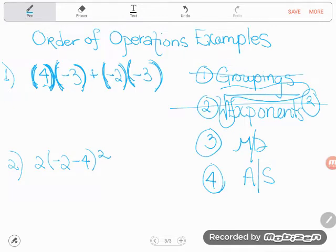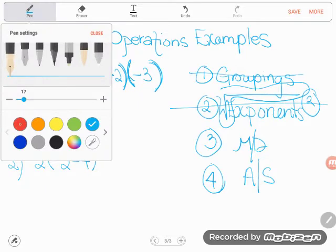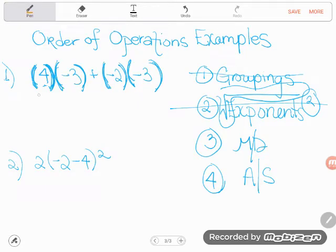And so there's nothing to do in the first two steps, but I do see some multiplication. So the third step is all multiplication and division. And I hope that you can see here, let me grab a different color pen, that there's two acts of multiplication here. Four and negative three are shoved up against each other. The only thing between them is parentheses. That means I'm multiplying. Same thing with negative two and negative three, shoved up together, nothing between them. That means I'm multiplying. Okay, since these two multiplications share no numbers, they don't have any numbers that they share, I can just go ahead and do them both at the same time.